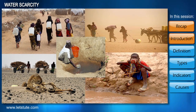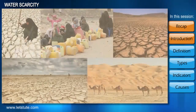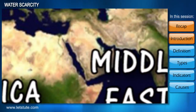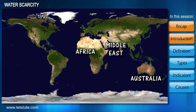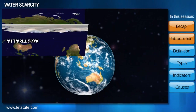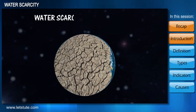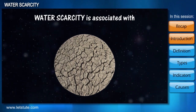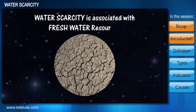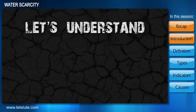The continent of Australia, being dry, faces frequent incidents of drought. In certain regions of Africa, more than a quarter of the population spends more than an hour per round trip to collect water. Arab countries also face problems of water scarcity, along with threats of desertification and land degradation. Whenever we talk about water scarcity, it is always associated with freshwater resources.